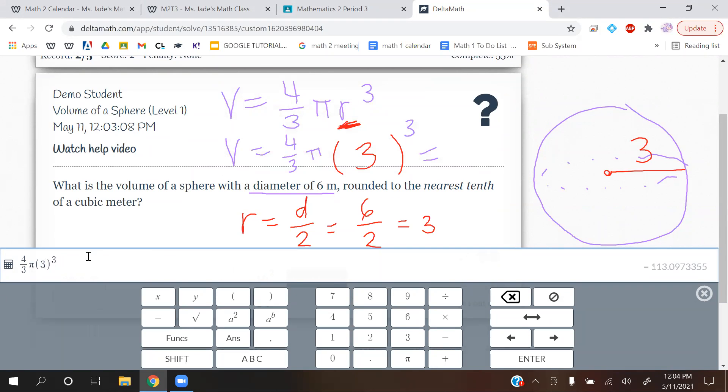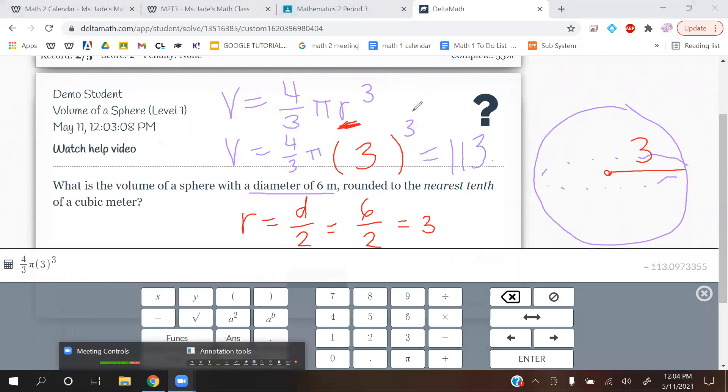So 4 thirds pi 3 cubed gives us that number that I will write out because I think it's too tiny for you to see. So you want to round it to the nearest tenth. That's one decimal place.